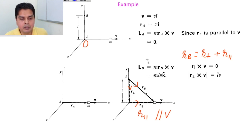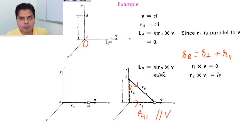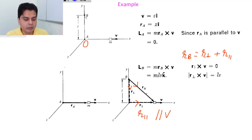Two key learning points: First, angular momentum depends on the choice of origin — choosing A gave zero, choosing B gave mlv. Second, even a particle moving in a straight line can have non-zero angular momentum, provided you calculate it about a point not lying on the line of motion. Students often think rotation or circular motion is needed — that is incorrect.